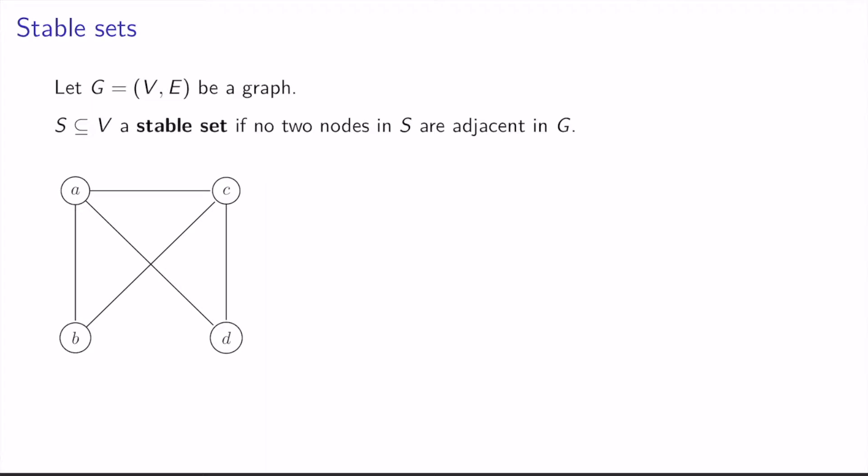For example, for the graph here, the set containing just node A is a stable set, and the set containing nodes B and D is also a stable set because there's no edge joining B and D. There's no stable set of cardinality 3 because if you look at A or C, each is joined to every other node in the graph.